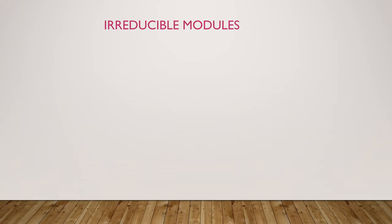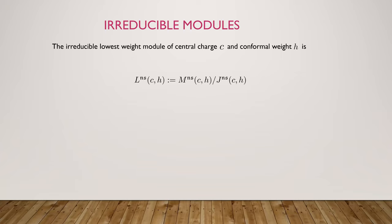We'll have some irreducible modules. When we take a Verma module and fix central charge C and conformal weight H, chances are that Verma module will already be irreducible. However, if your Verma module is reducible, it has a maximal submodule J, and when you take this quotient you end up with an irreducible module. J could be trivial or not, but in any case we call L(c,h) the irreducible highest weight modules for the N equals 1 algebra.